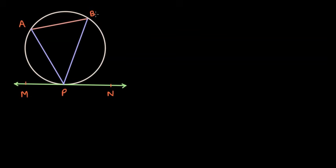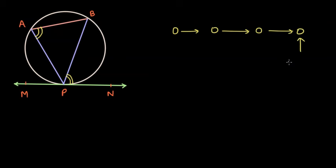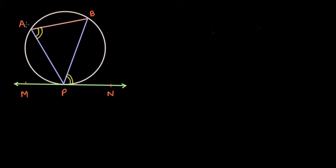What we really want to do here is to show that angle BPN is going to be equal to angle PAB. All these proofs are like a chain — if you prove one thing, you can prove another, and from that another and then another. This is a very important result we need to arrive at. So we want to prove that angle BPN is equal to angle PAB, or equivalently, angle APM is equal to angle ABP. We will only focus on one pair.